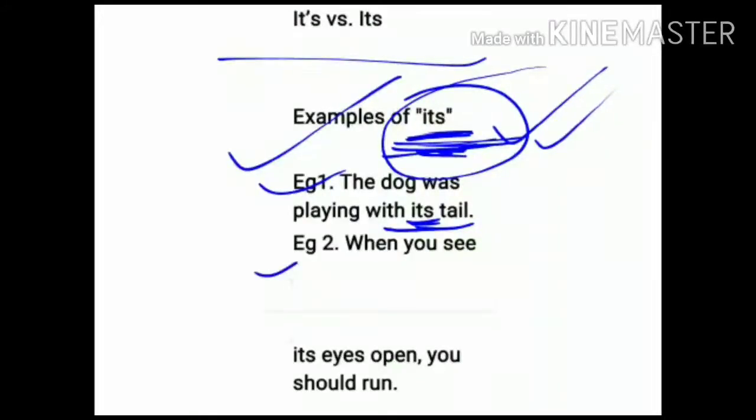Coming to example number 2: When you see its eyes open, you should run. Again you see the use of it—possession is being discussed, someone's eyes opening. That means its will be used.